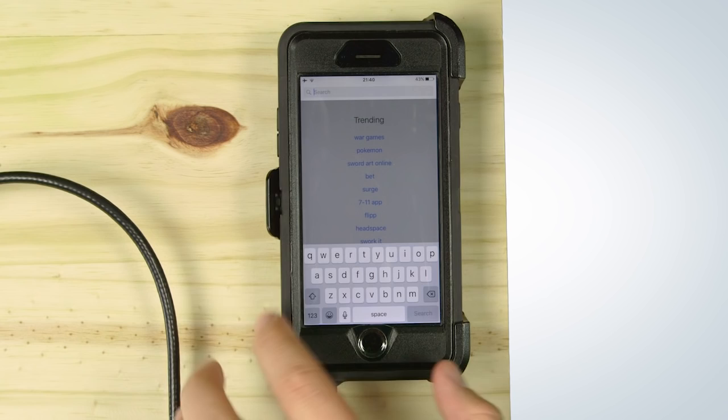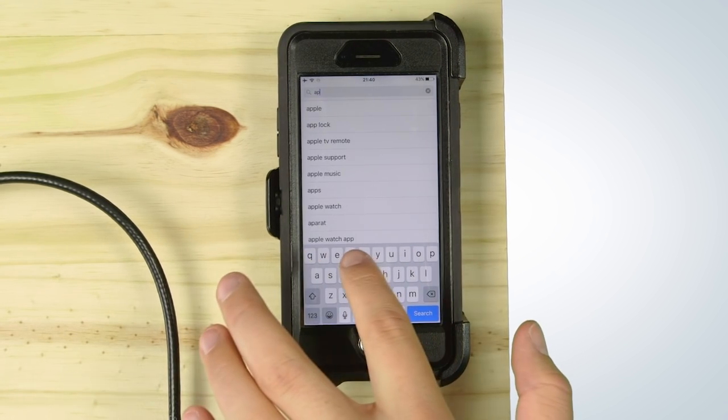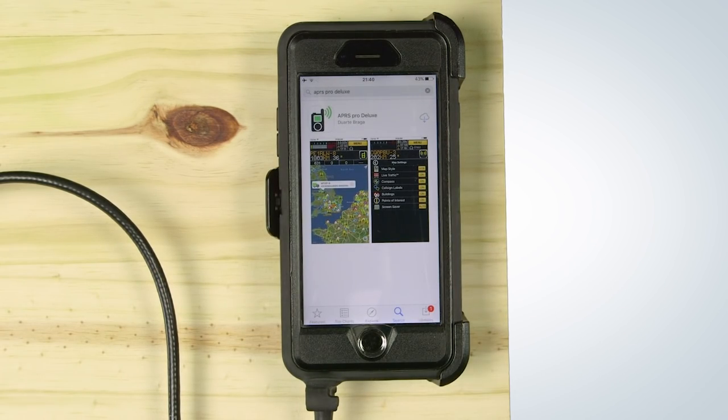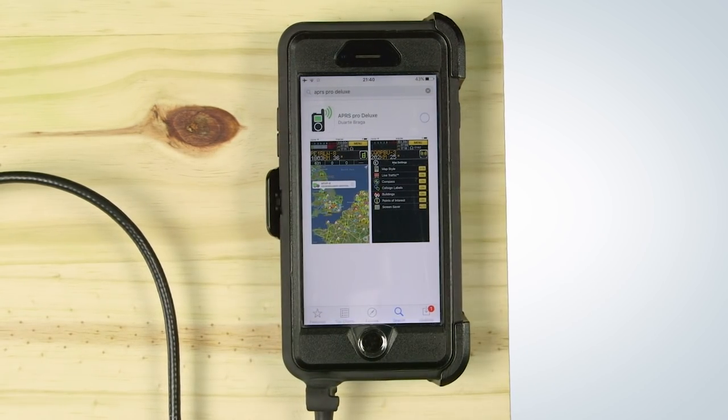There are a couple of different apps to run APRS. For iOS, we recommend APRS Pro Deluxe. It has the ability to send and receive APRS data even outside of cellular coverage. While the app is downloading and installing, let's configure our radio.